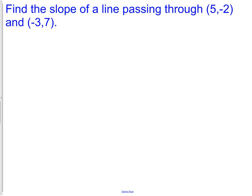Now here we have a question without the graph. Find the slope of a line passing through 5, negative 2, and negative 3, 7.